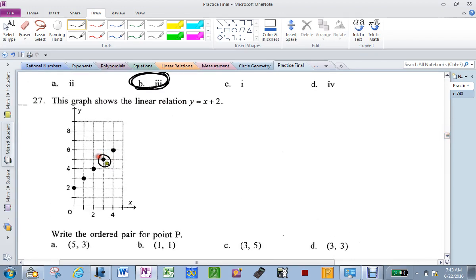Point p is right there. What's its ordered pair? I need the x first, which is 3. And then the y, which is 5.